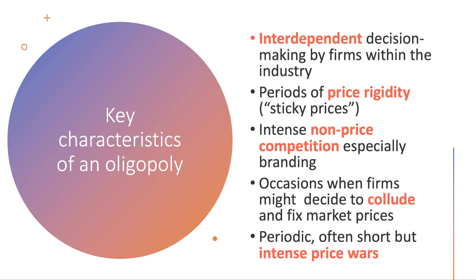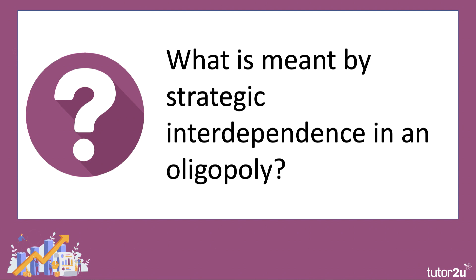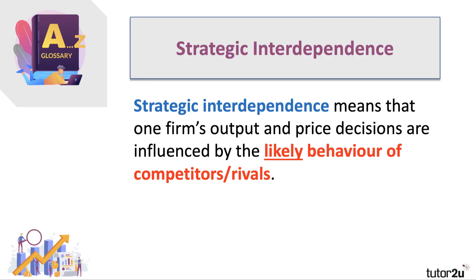Strategic interdependence means that one firm's output and price decisions are influenced by the likely behaviour of competitors — particularly those in the market, and conceivably those who might enter in a contestable market. You can't choose price, output, marketing, and investment in isolation; you have to think about likely reactions of rivals. This means there is a lot of uncertainty in an oligopoly market, which you can build into evaluation.